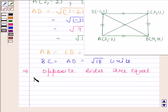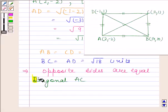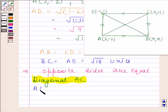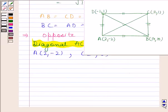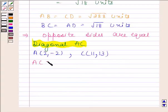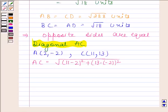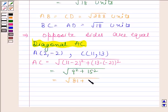Now we find the length of diagonal AC. Coordinates of A are (2, -2) and coordinates of C are (11, 13). So AC is equal to square root of (11 minus 2) whole square plus (13 minus (-2)) whole square. This is equal to square root of 9 squared plus 15 squared, which equals square root of 81 plus 225, which equals square root of 306. So AC is equal to square root of 306 units.